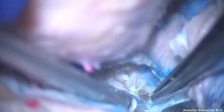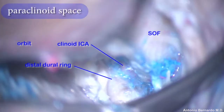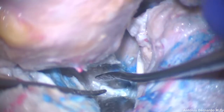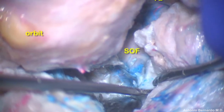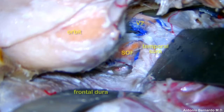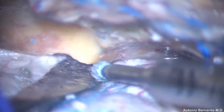Once the anterior clinoid process has been removed, the paraclinoid space becomes visible. The bottom of the field in the paraclinoid space is the clinoid internal carotid artery, encircled by the distal dura ring and the proximal dura ring. Immediately visible is the optic nerve medially and the oculomotor nerve laterally. This paraclinoid space is completely extradural and extra-cavernous, because the proximal dura ring seals the cavernous sinus and the distal dura ring separates the intradural space. It is very important to drill away any bony spur that would obstruct direct visualization of the floor of the middle fossa.